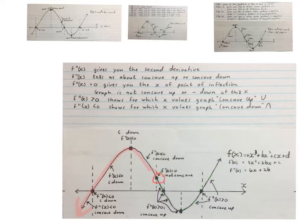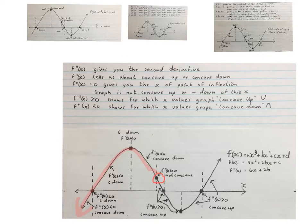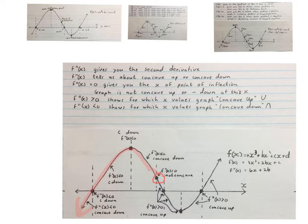Next: where is the second derivative smaller than zero, or the second derivative is negative? It shows for which x values the graph is concave down — I made it an upside-down U. From that point all the way to negative infinity, this graph is concave down, or the second derivative is smaller than zero. The graph is concave down everywhere from the point of inflection leftward, excluding that x value. At the point of inflection it changes — it is not concave up or down.